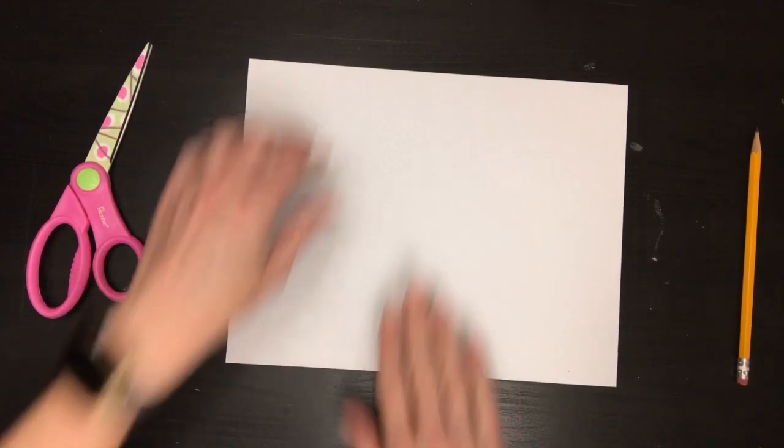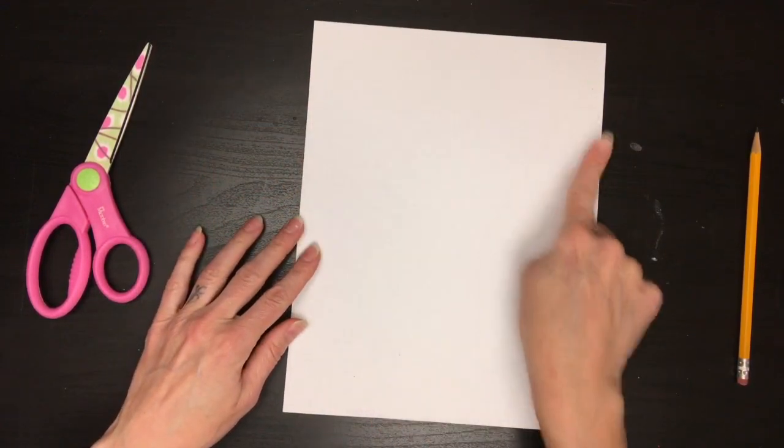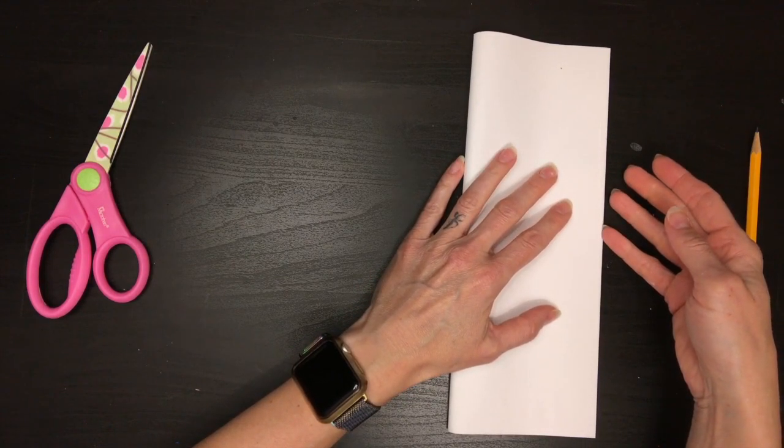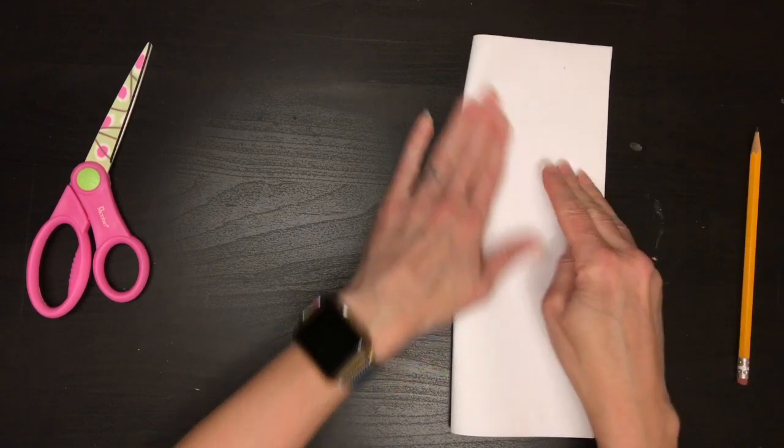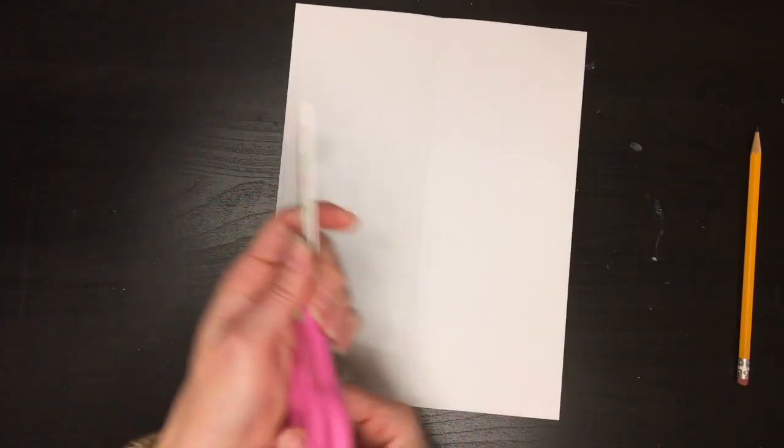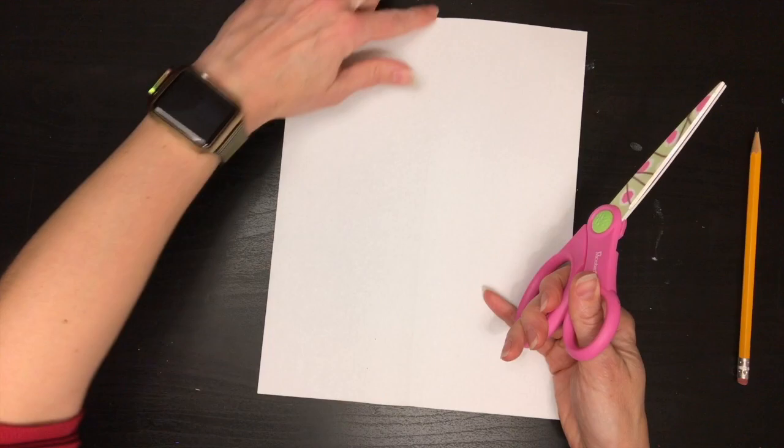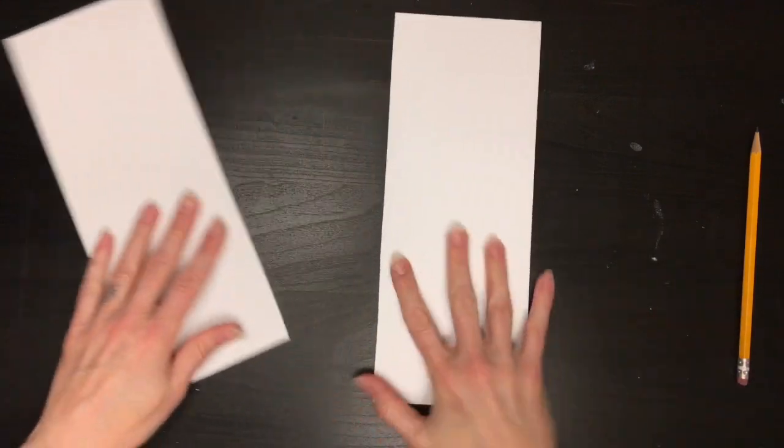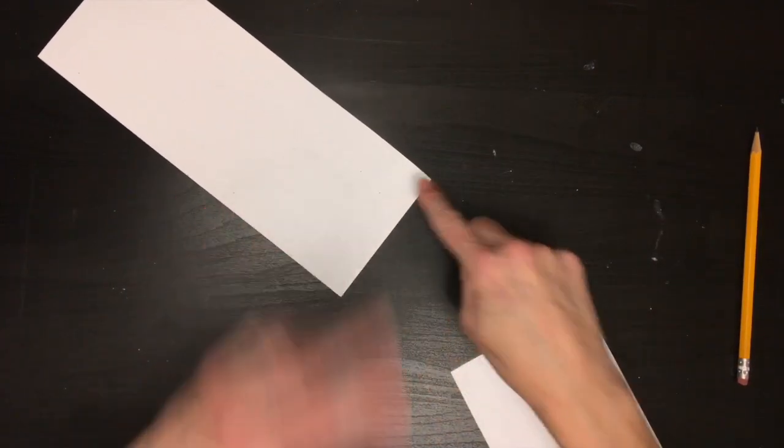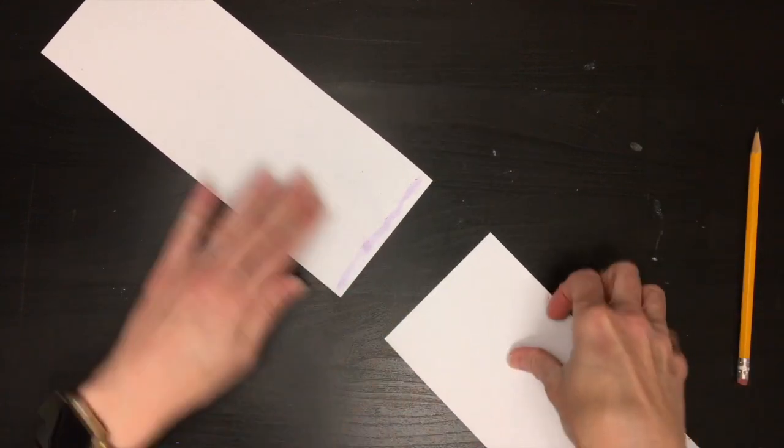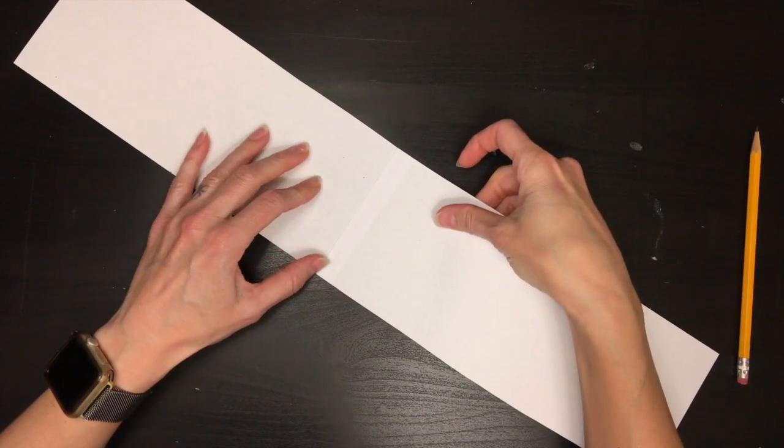Alright, here we go on our ice cream adventure. Start with your white paper. Turn it so that it's tall or vertical in front of you, and fold it in half one time. After you've folded it in half, you can go ahead and open it up, and then you're going to cut straight up the center. Once it's cut, you're going to use your glue stick, and you're going to glue the two halves together on one of the short sides.